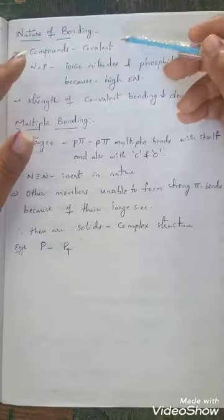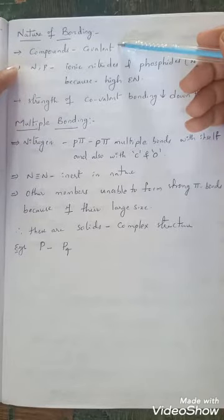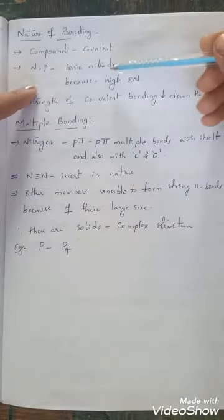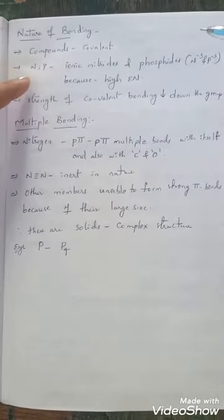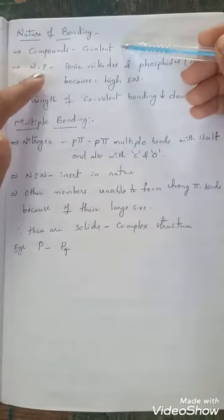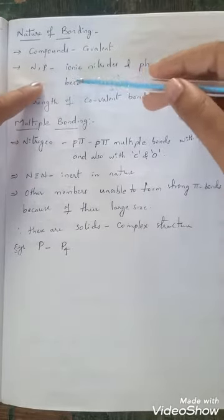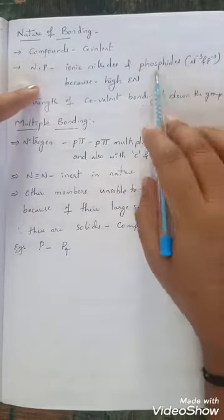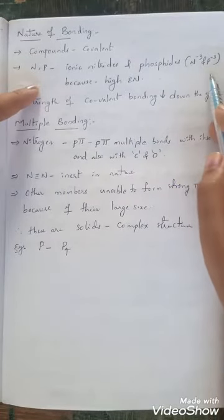Most of the compounds formed by group 15 elements are covalent in nature. Especially nitrogen and phosphorus can also form ionic compounds — ionic nitrides and phosphides. The ionic nitride is N³⁻ and the ionic phosphide is P³⁻.